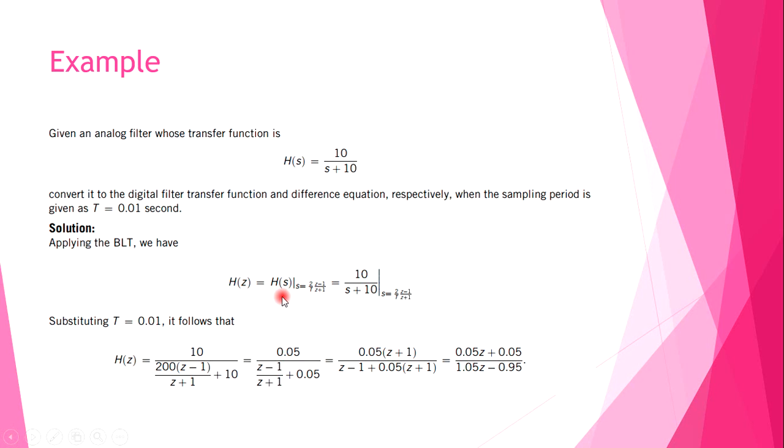Substituting S = 2/T × (Z-1)/(Z+1), we get the following equation. Simplifying by mathematical rules, we get the transfer function as (0.05Z + 0.05)/(1.05Z - 0.95).